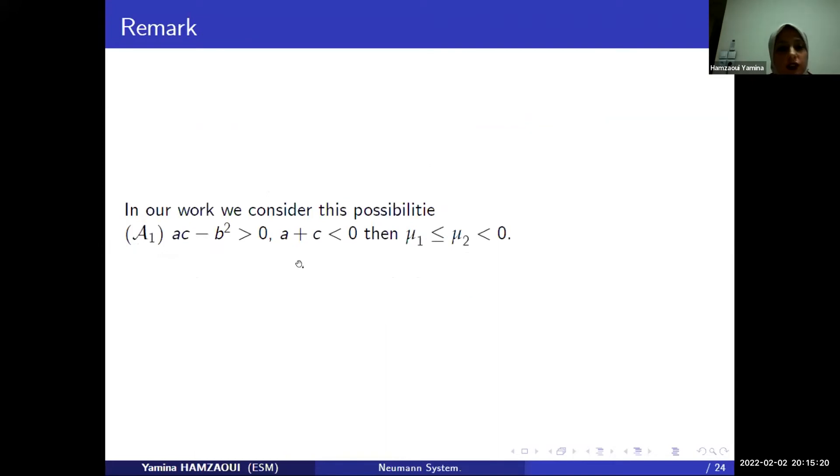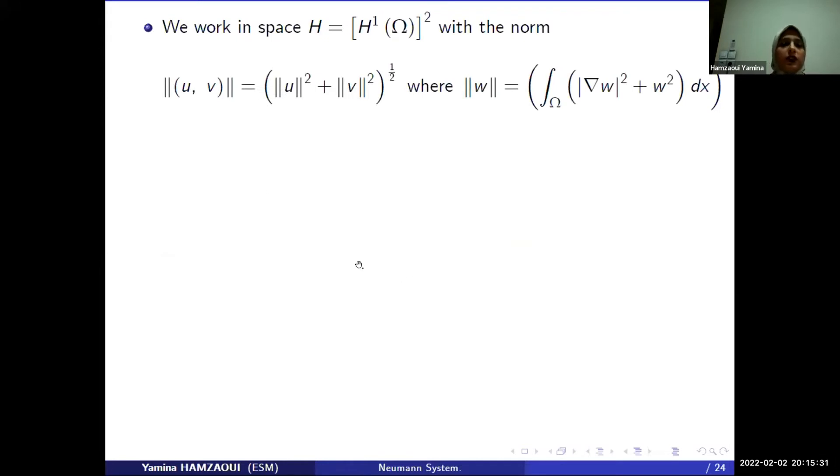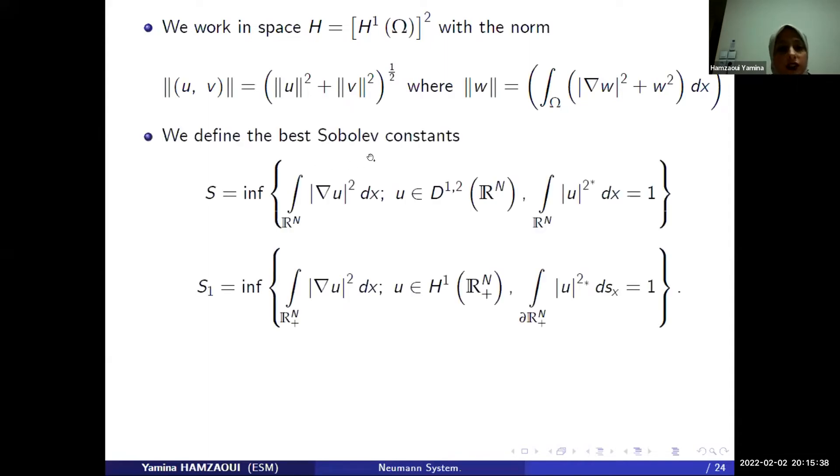In our work, we consider these possibilities. We put a condition on A, B, C, then the eigenvalues of the matrix are negative. We work in space H with this norm.